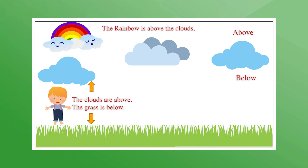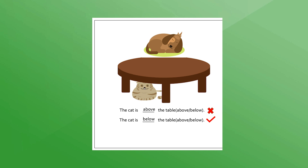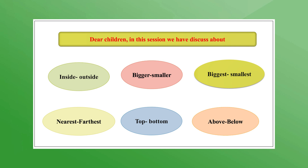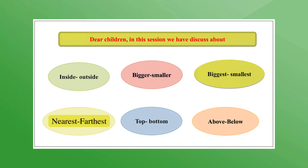The words above and below tell you the position of things in relation to any specific object. Take a look at the table — who is above the table and who is below? Is it the cat or the dog? In the pictures beside the table, we see a cloud and an aeroplane. Where is the aeroplane — is it above or below the cloud? So far we have discussed inside, outside, bigger, smaller, biggest, smallest, nearest, farthest, top, bottom, above, and below.